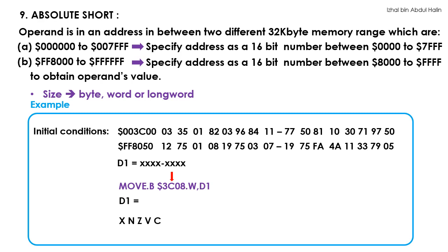This results in 003C08 to be the address of the operand. On the other hand, the dot B after the mnemonic MOVE tells the microprocessor that a byte is to be moved. Thus, the data at 003C08 is copied into register D1. Since the data moved is 77, and 77 is a positive signed number that is not 0, the status register is updated as X0000.